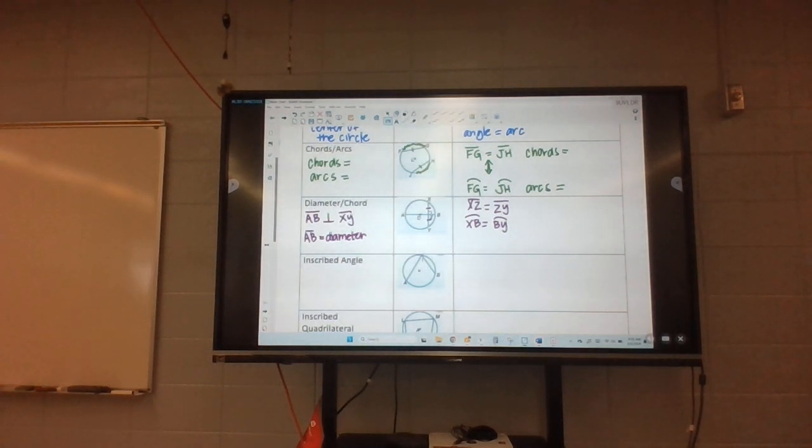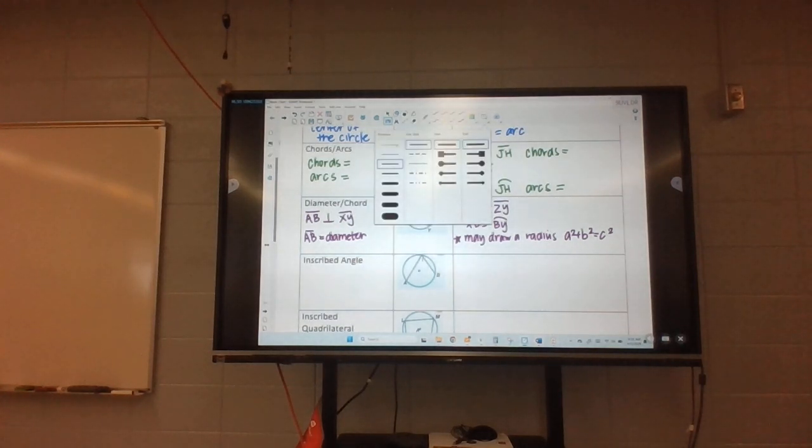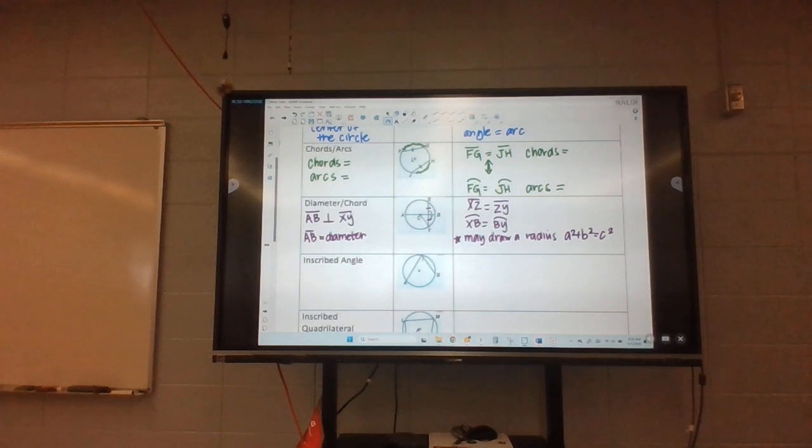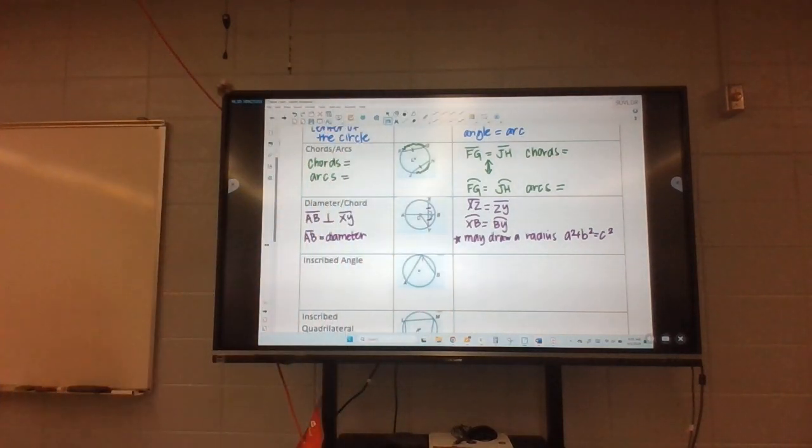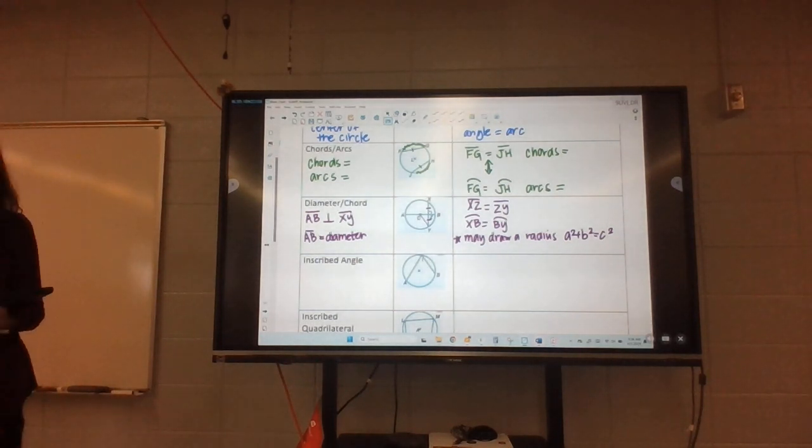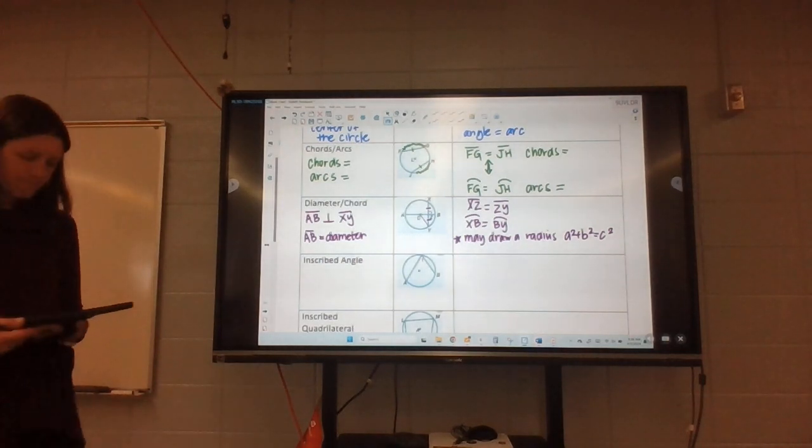But this is also the type of problem, if you guys recall, this is one where we drew in a radius. So if it's helpful, you may need to draw in a radius. And when that happens, typically we can use Pythagorean theorem, and I'll draw a radius in where it would be helpful. So if I drew in like CY, if you guys recall, we did that and it made a little right triangle there which allowed us to find maybe one of those pieces that we were missing. And they're going to usually tell you something about the radius that might be helpful. So this is something that would be useful to be aware of, that you may need to draw that in.